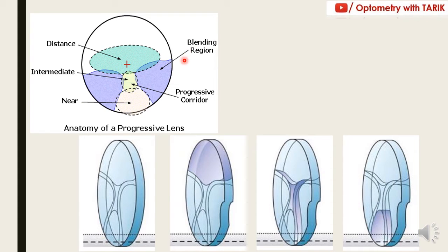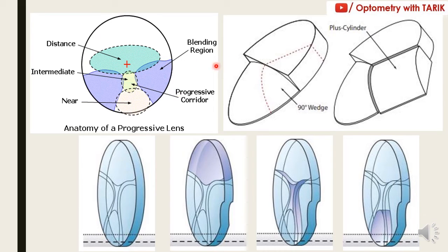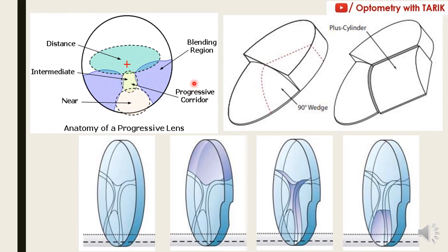An important point to understand is the blending region, which has an unwanted astigmatism present. This is a progressive lens with the distance optical power and the continuous increasing power from 0.25 to plus 2. Because of this change, a section develops which could give a slight amount of image jump. To make this a single continuous surface, a wedge of 90 degrees is cut at this point and a plus cylinder is included to make it smooth. However, because of this procedure, this area starts exhibiting a particular unwanted astigmatism — called the unused area or blending region or area of unwanted astigmatism.